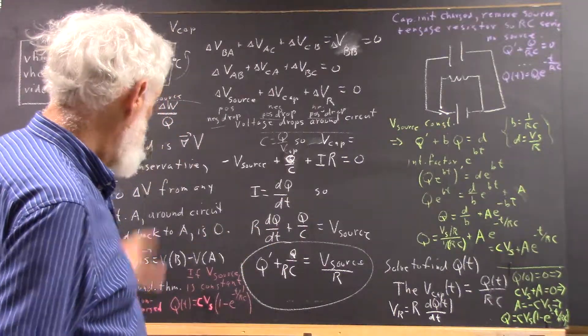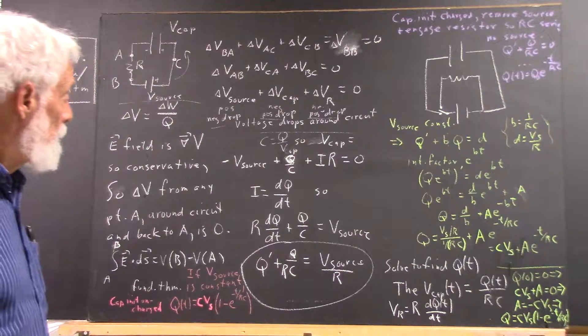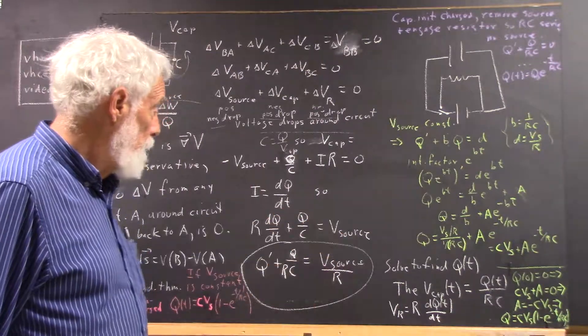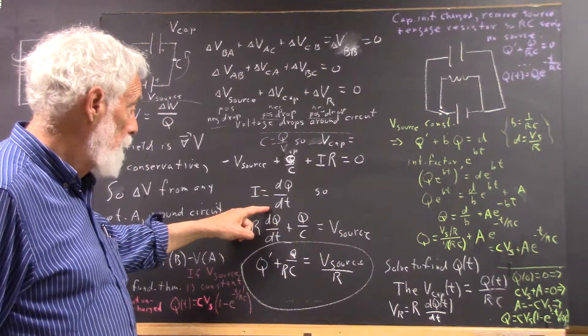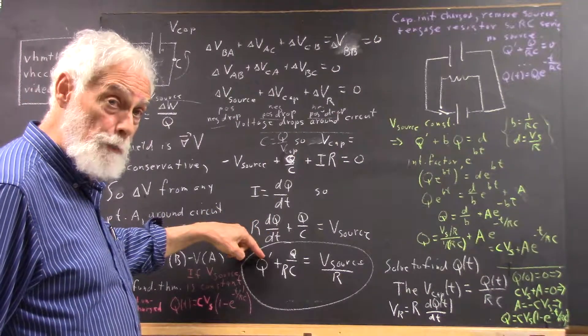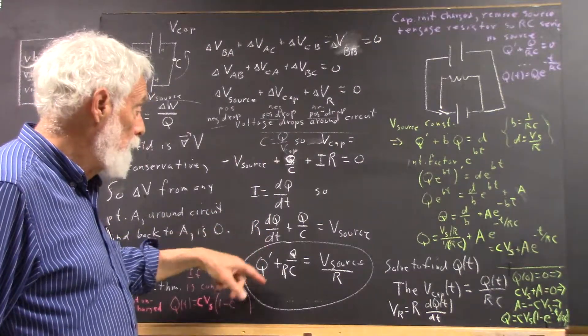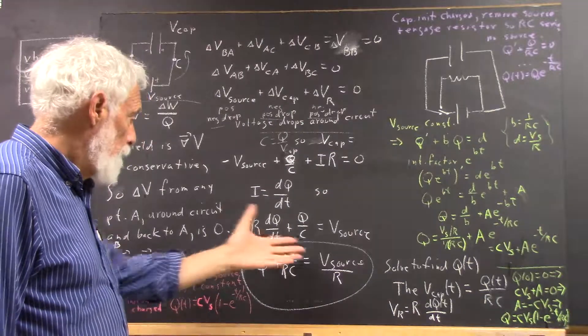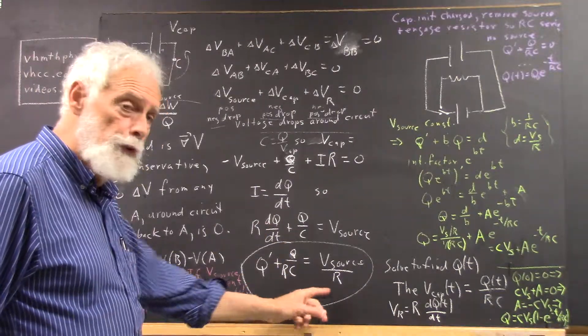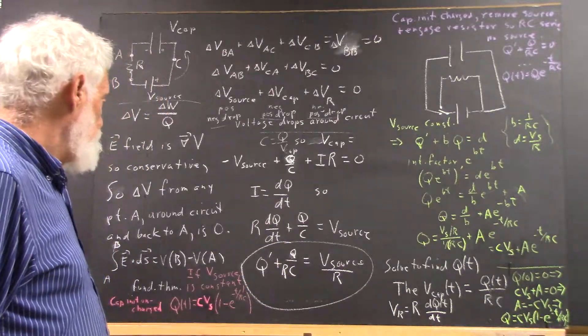We discussed all that in the preceding video, but this equation can then be written if we write q as dq/dt as q prime, indicating the derivative of q with respect to t, and divide through by R. We have this differential equation.